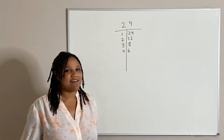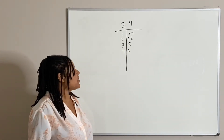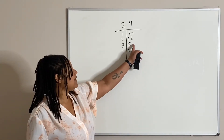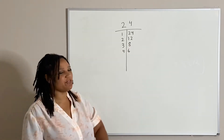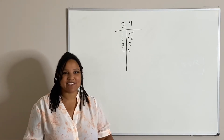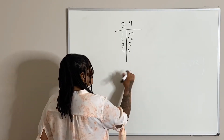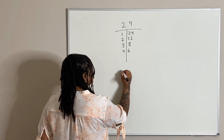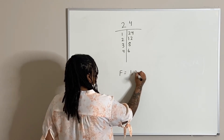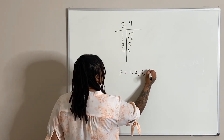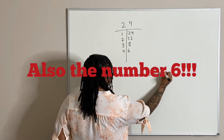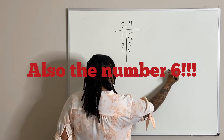What about seven? No, seven doesn't work. What about eight? Yes, we've already said eight works with three. Therefore, we already have a repeat — we can stop. So our factor numbers are one, two, three, four, six, eight, 12, and 24.